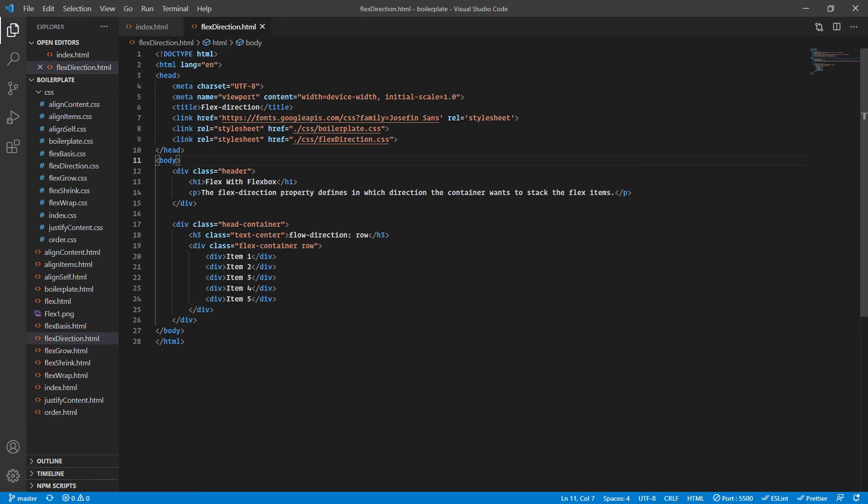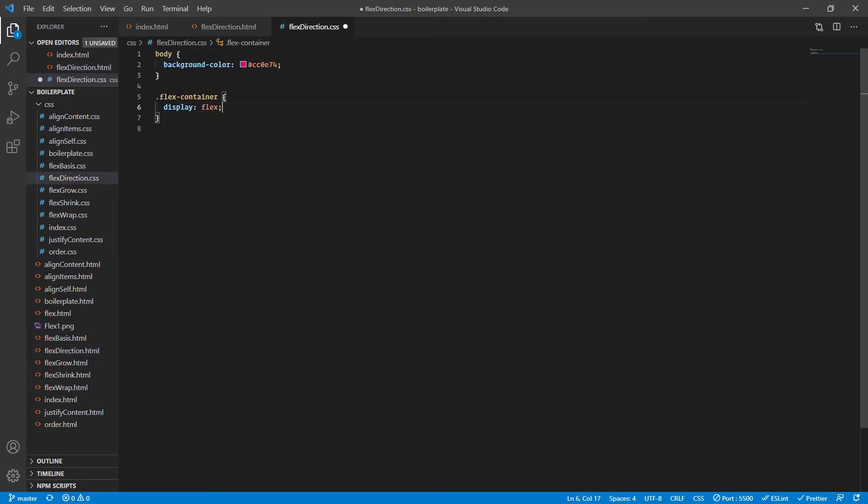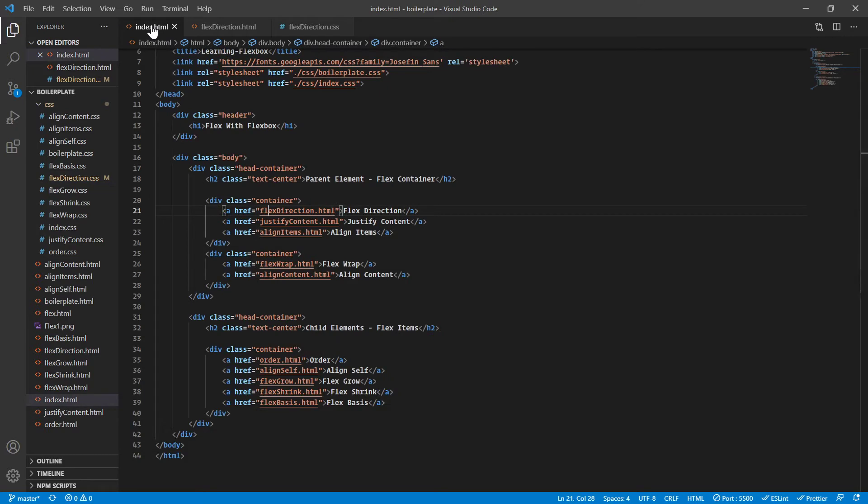The first link points to the flex direction. Inside the flex direction, we have a CSS link to flex-direction.css. So this is how our boilerplate is structured.